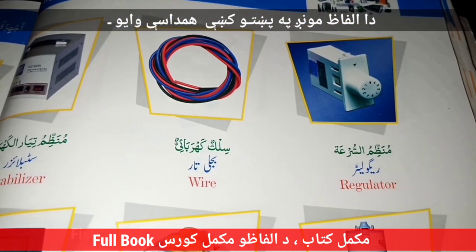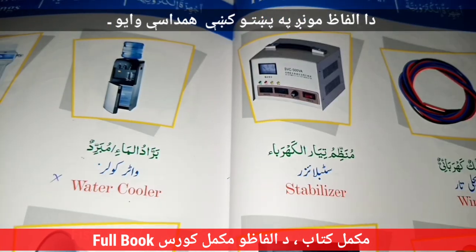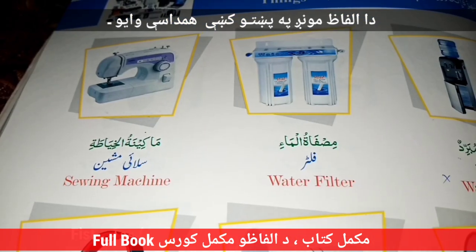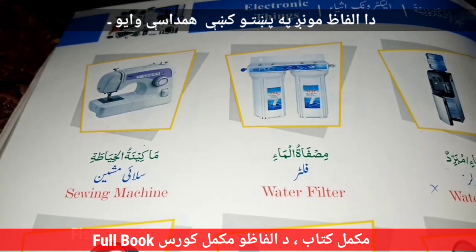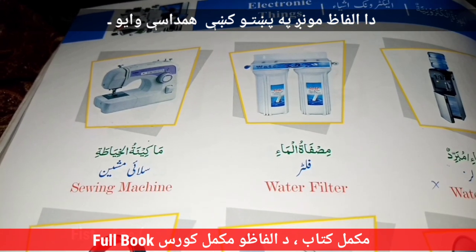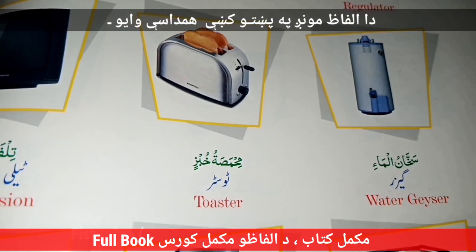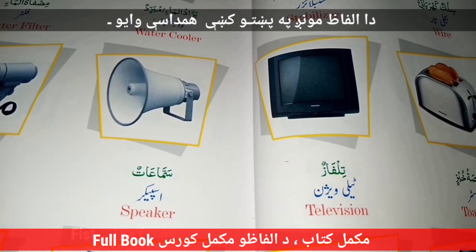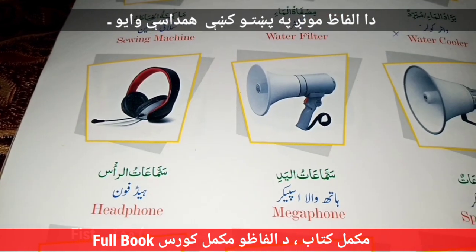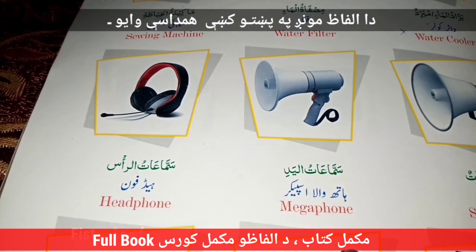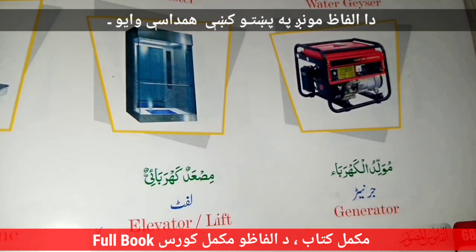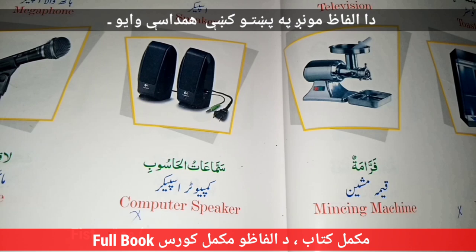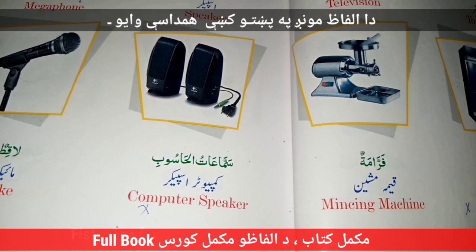Electric Button. Regulator — Wire — The Vigilator. Stabilizer. Step Laser. Water Cooler. Water Filter. Savings Machine — The Gondolo Machine. Water Geyser. Toaster. Television. Speaker. Headphone. Megaphone. Generator. Elevator — Ya Lift. Barachior Khe Khalik Khijji. Mensing Machine — The Kemi Machine.